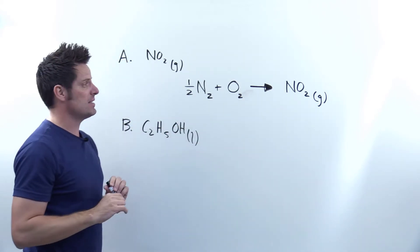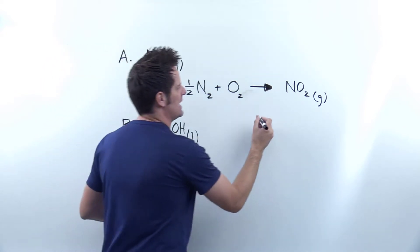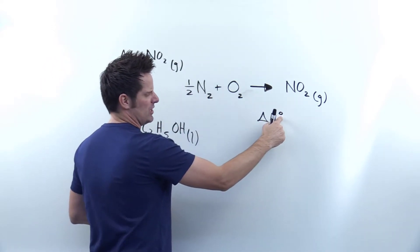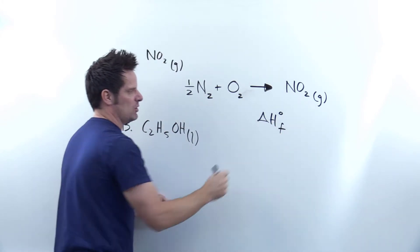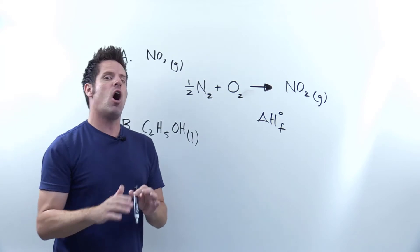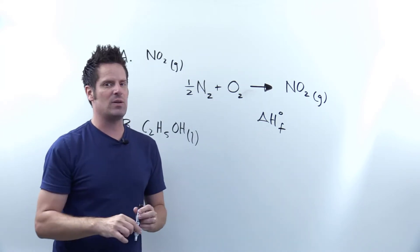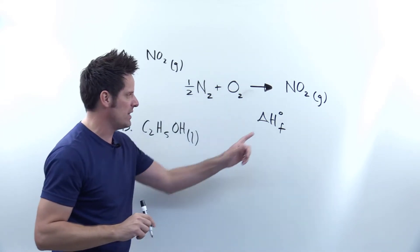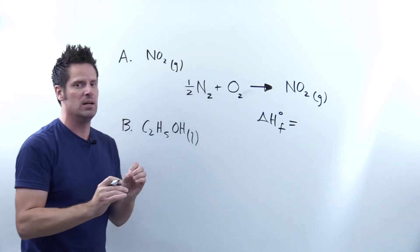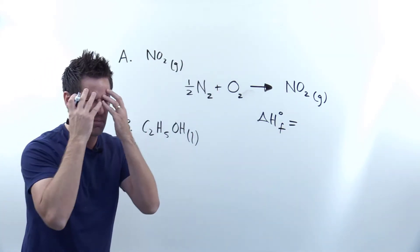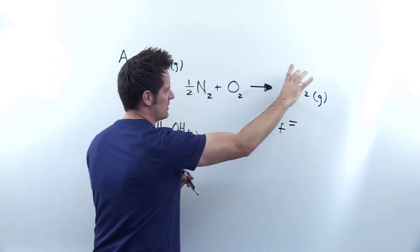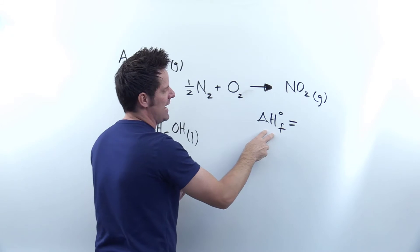Now the last step of this process is to write the delta H of formation. So you write down delta H with a little degree sign above it and an F subscript. The degree sign means under standard conditions which, as I discussed, are 298 Kelvin, 25 degrees Celsius, and one atmosphere of pressure. That's what that note means. So the standard enthalpy of formation of this is equal to some number. Now to be honest, or to be complete, I guess, and correct, you have to write both of these things. You have to write the balanced equation and the delta H of formation.